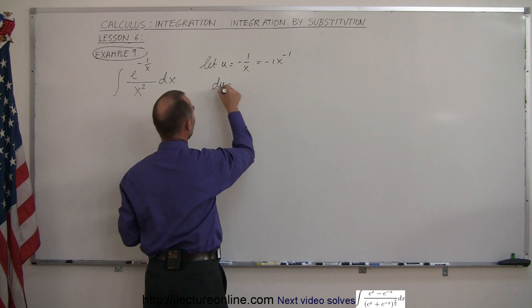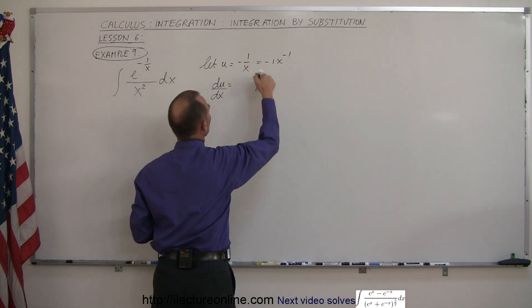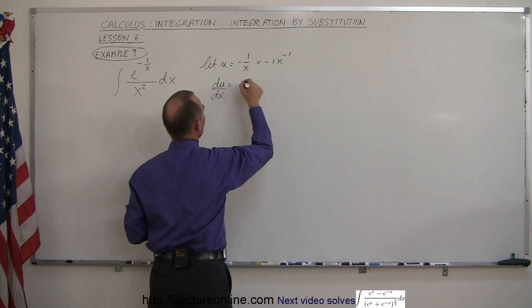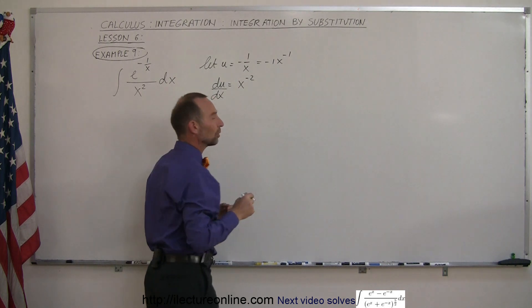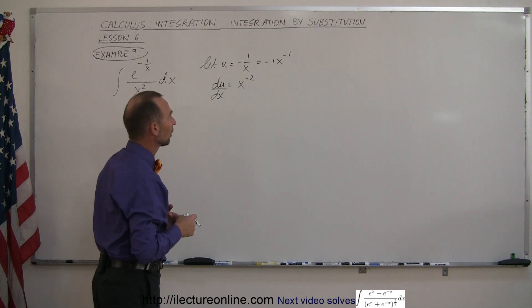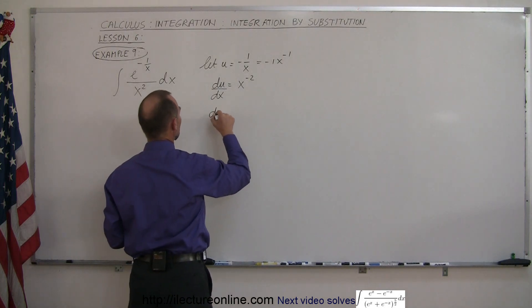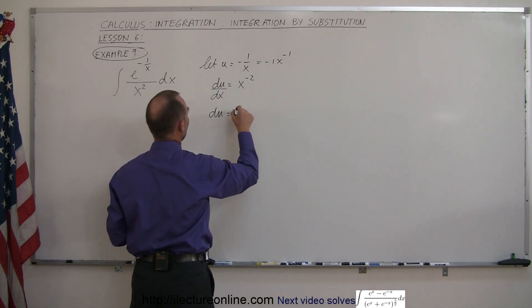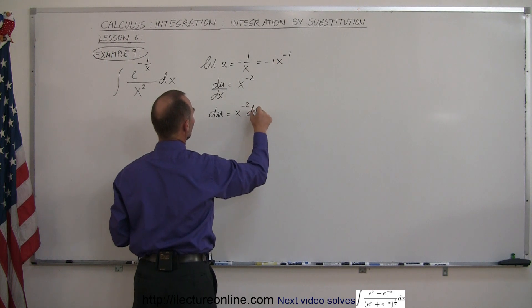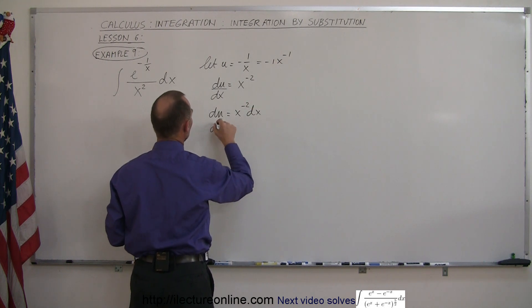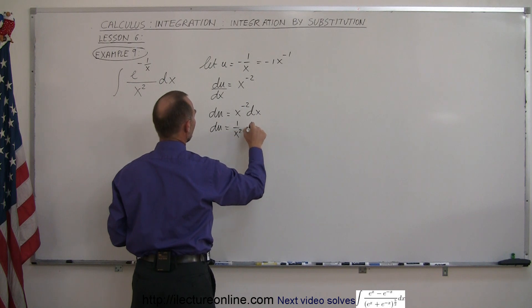And if we take the derivative of that, du dx, that's equal to, bring the exponent to the front, so that would be plus 1 times x to the minus 2, because then we subtract 1 from the exponent. And so that means that du is equal to x to the minus 2 dx, which can be written as du is equal to 1 over x squared dx.